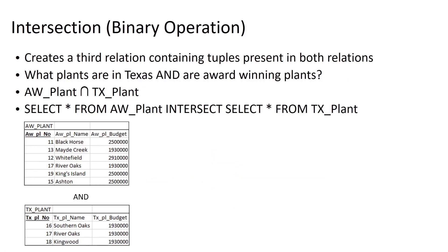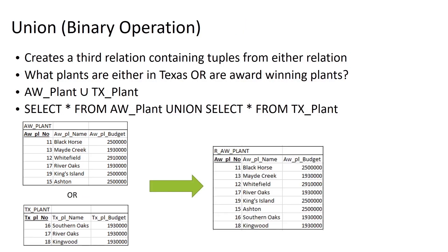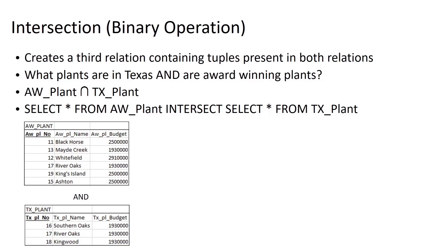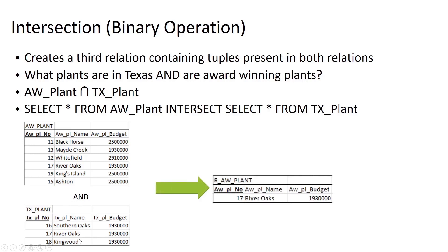Intersection creates a third relation containing tuples present in both relations. Where union is 'either,' intersection is 'both.' To answer 'what plants are in Texas and are award-winning?' the relational algebra is AW_plant ∩ Texas_plant, using the upside-down U symbol. The SQL is: SELECT * FROM AW_plant INTERSECT SELECT * FROM TX_plant. Looking at the data, River Oaks is the only tuple present in both relations, so that's what appears at the intersection.